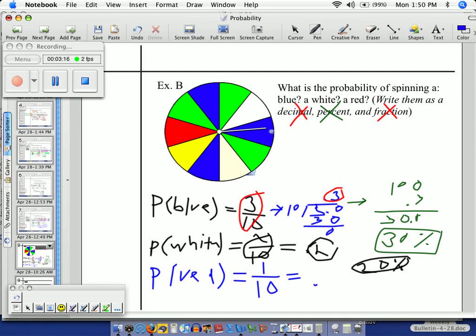So the decimal is now one-tenth. And then as a percent, it is ten percent. Here are my three answers for the probability of red, as requested in the fraction, decimal, and percentage forms.